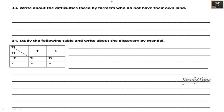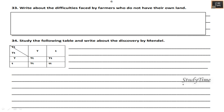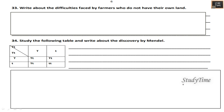Write about the difficulties faced by farmers who do not have their own land. They have to go to another place for farming or livelihood — they must work on a big farmer's land or go in search of another place for livelihood. Study the following table and write about the discovery by Mendel. Mendel experimented on peas. You can refer to the table and write about his discovery.